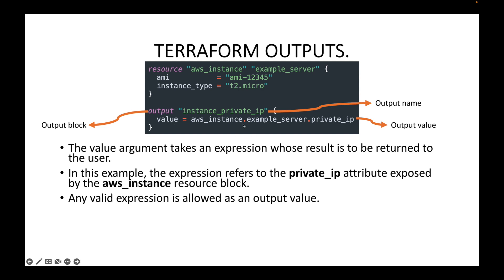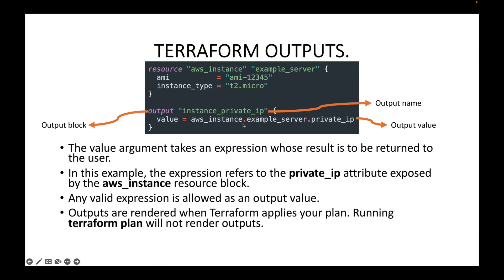In this output value, any valid expression is allowed as long as it is going to return the right value. Outputs are rendered when Terraform applies your plan — running terraform plan will not render the output. The output will show the value only when you run the terraform apply command, that is when you create the system resources.